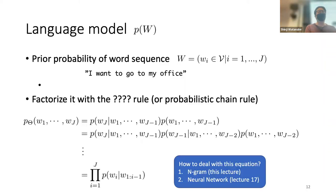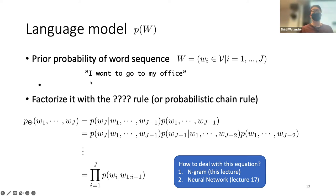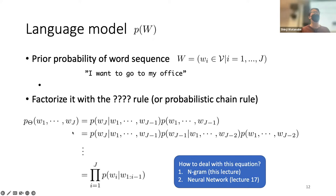Let's start the language model. The language model — the last component — tries to estimate P(W). As an example, take the sentence 'I want to go to my office,' and we can try to build a probabilistic model. Similar to what we have done previously, we factorize this probability —